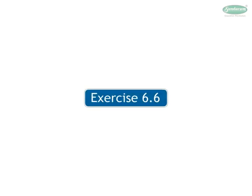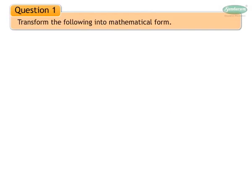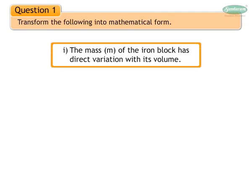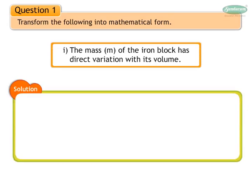Exercise 6.6, Question 1: Transform the following into mathematical form. Problem 1: The mass of the iron block has direct variation with its volume. Since mass directly varies as volume, we write it symbolically. Hence, m is equal to kv, where k is constant.